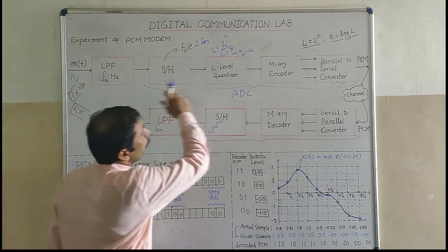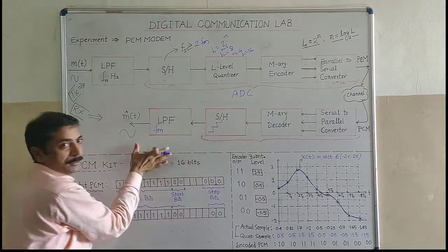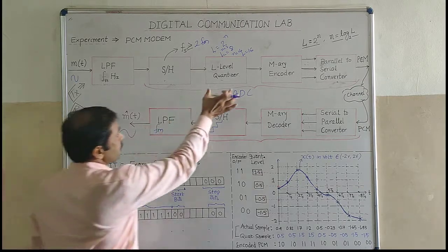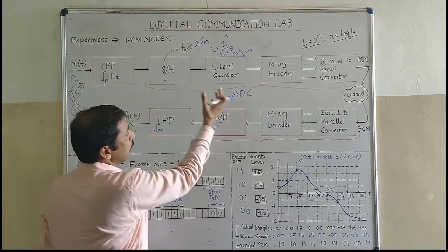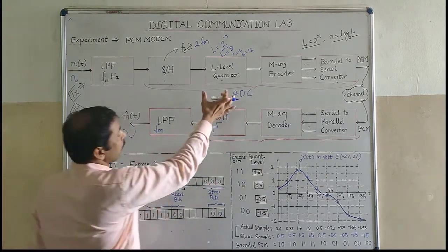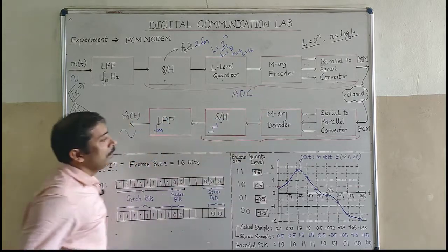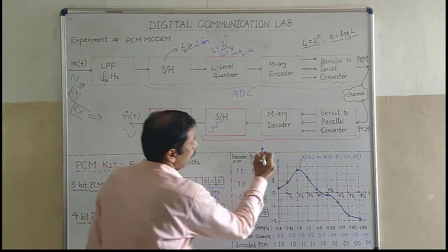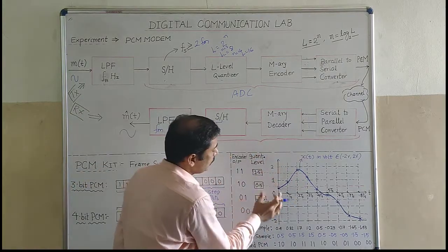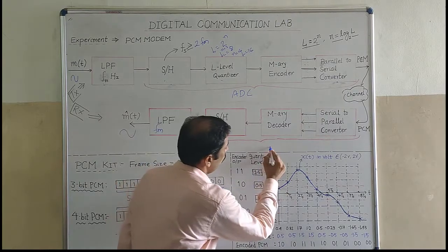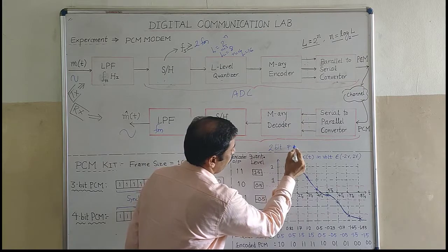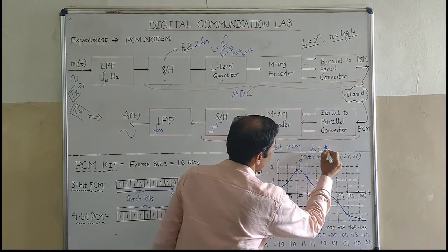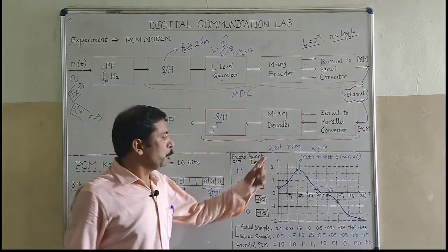Hope everyone understood the modulator and demodulator. Now I want everyone to understand the process of quantization in detail, because it is very important — it is the heart of pulse code modulation. If you understand the quantization process and binary encoding, you can understand the whole process. This is the quantization process for 2-bit PCM. Two-bit PCM means how many quantization levels? Four — 2 raised to the power 2 equals 4. I have four quantization levels.